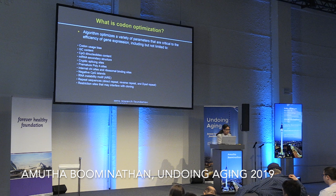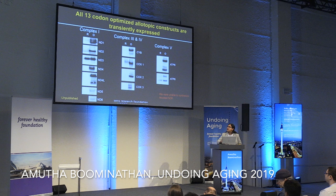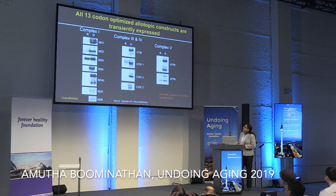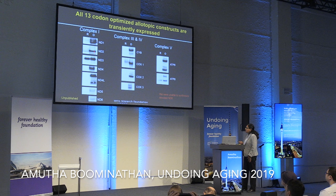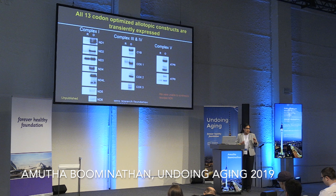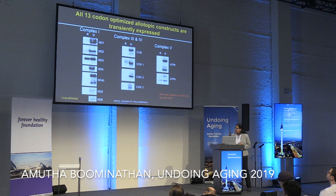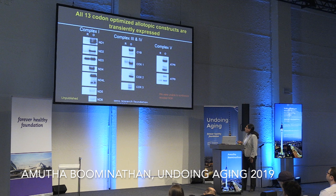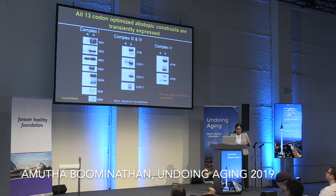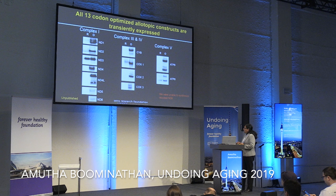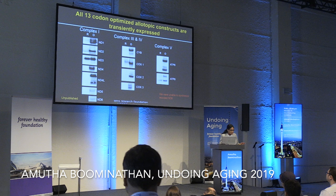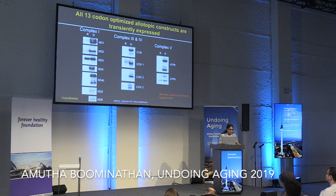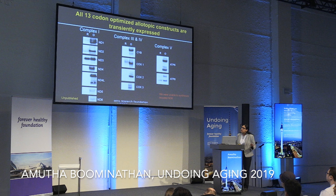We synthesized two versions of all 13 genes: the minimally recoded version and the codon-optimized version, and transfected them into HEK293 cells. Practically all 13 codon-optimized genes can be expressed under transient conditions. Some genes such as ND3, COX1, and ATP8 are expressed under recoded conditions but not nearly equivalent to the codon-optimized version. We were unable to synthesize the recoded version for ND6 due to unusually high GC content, but the codon-optimized version worked to a certain extent.